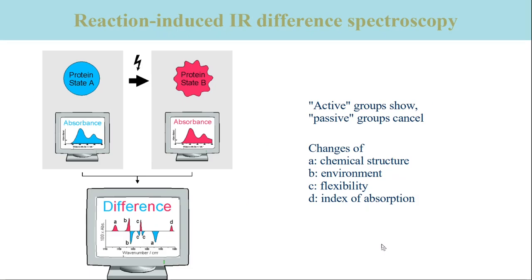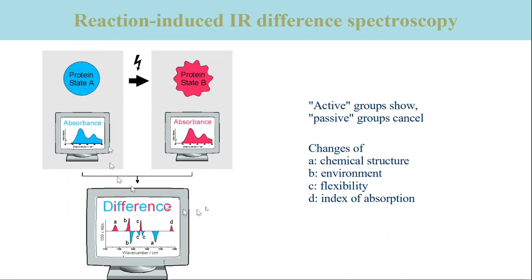The figure illustrates how a typical reaction-induced difference spectrum is generated. The protein is prepared in a stable state A and the absorbance of this state is measured. Then the reaction is triggered — another word for initiated. The protein proceeds to state B and again the absorbance is recorded.